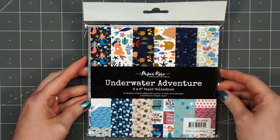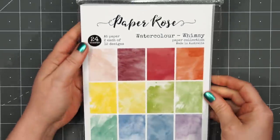There are 18 double-sided papers included in this collection and several of them have a bunch of cut-apart images and sentiments.